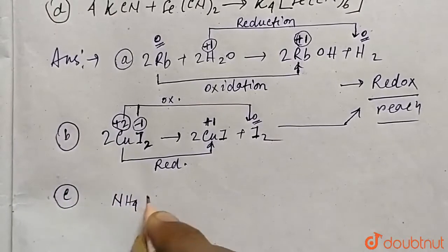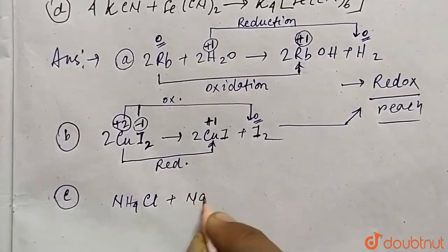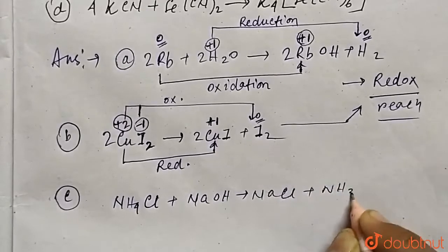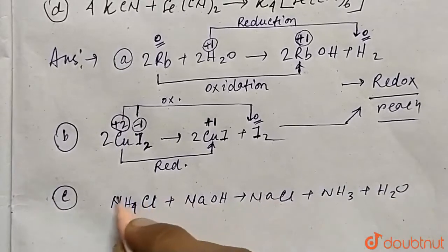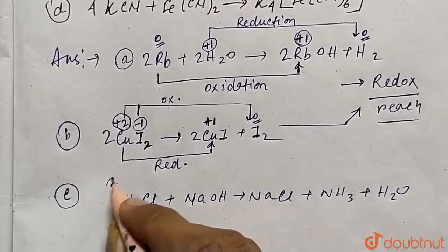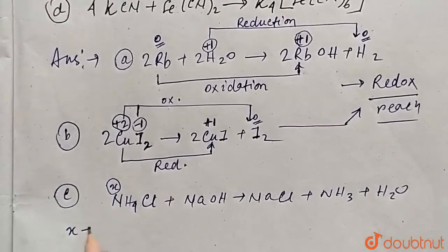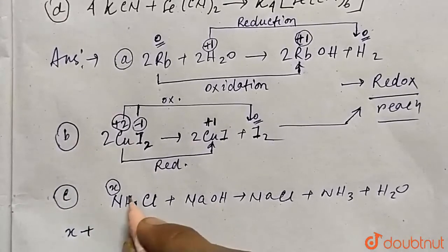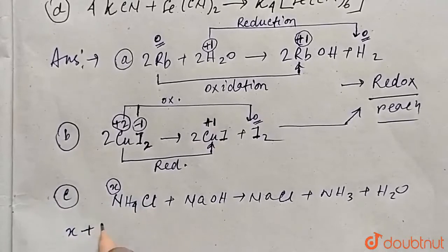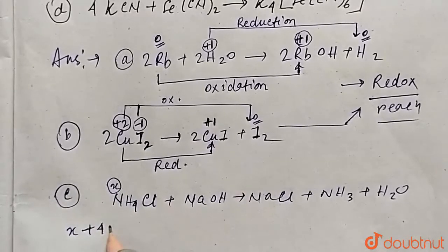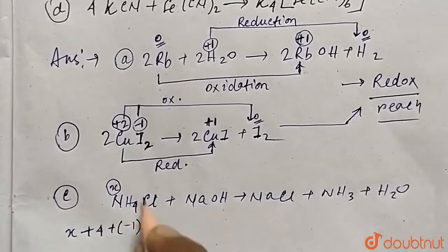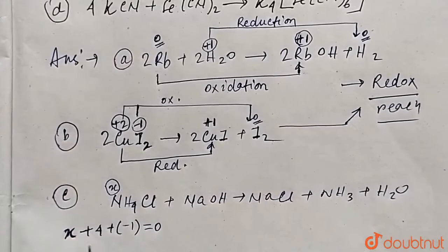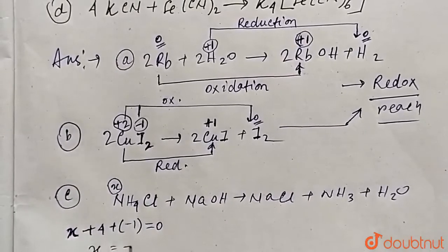Reaction C: NH₄Cl + NaOH → NaCl + NH₃ + H₂O. In ammonium chloride NH₄Cl, let nitrogen's oxidation state be x. Then x + 4(+1) + (-1) = 0, so x + 4 - 1 = 0, giving x = -3. Nitrogen has oxidation state -3 in NH₄Cl.